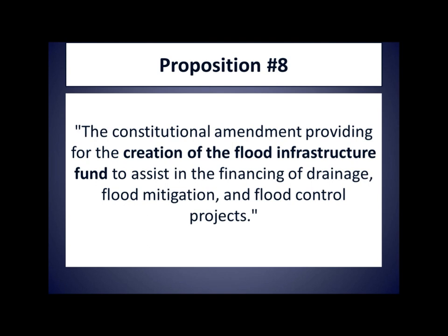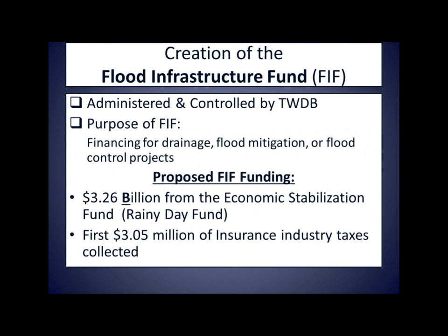Proposition 8: 'The Constitutional Amendment providing for the creation of the Flood Infrastructure Fund to assist in the financing of drainage, flood mitigation, and flood control projects.' There was unanimous support in both the House and Senate — not a single nay vote. This proposition is also in response to the governor's request for disaster response legislation. Federal funds are available for flood projects after disastrous events, but counties and cities may not be able to put up the matching funds necessary to access that federal money, and because of that, federal money has been left on the table. The Flood Infrastructure Fund, or FIF, created by Proposition 8 will take money from the Texas Economic Stabilization Fund, or ESF — also known as the Rainy Day Fund — which was created in 1988 and is funded primarily with taxes on oil and gas production.